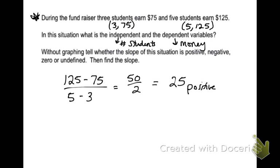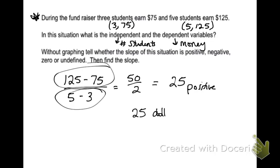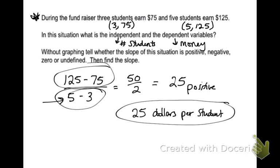To get our units for 25, you take the units of your y — the units of the top part — per the units of the bottom part. In this case, 25 and 75 was money, so it's going to be $25. And on the bottom, 5 and 3 were students, so it's $25 per student. That means each student raises $25.